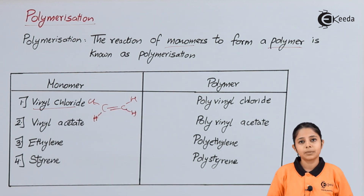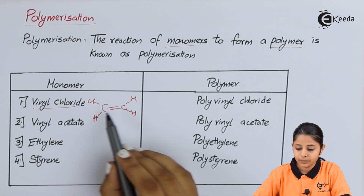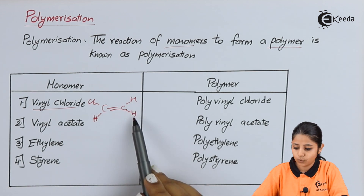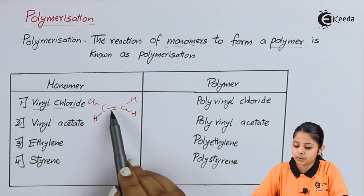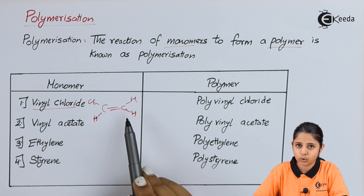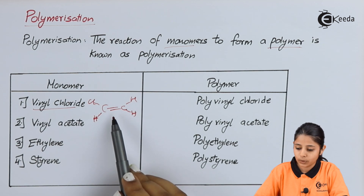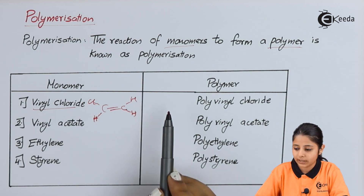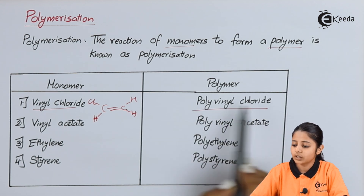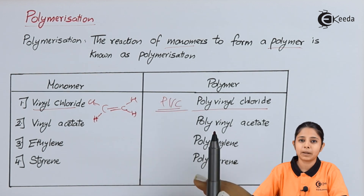The second carbon also has a valency of 4: its first two bonds are with the first carbon, and the remaining two are with hydrogens. So both carbons make 4 bonds each — this is the vinyl chloride macromolecule. Many vinyl chloride units combine to make polyvinyl chloride, the polymer, also known as PVC, which is used for making plastic pipelines.